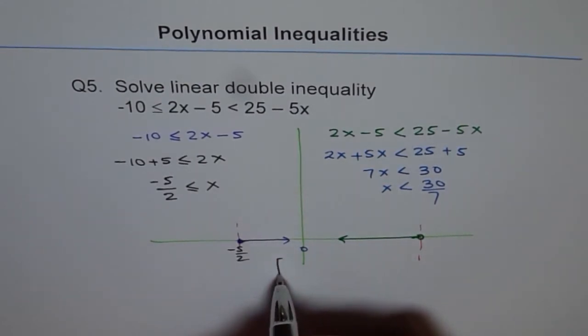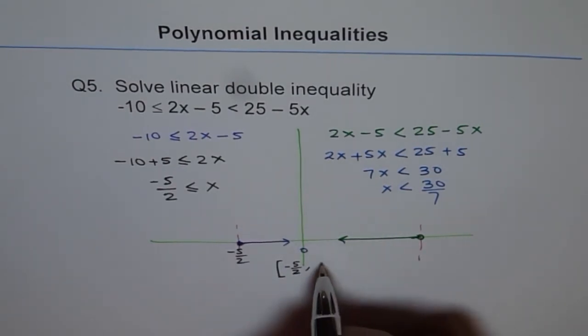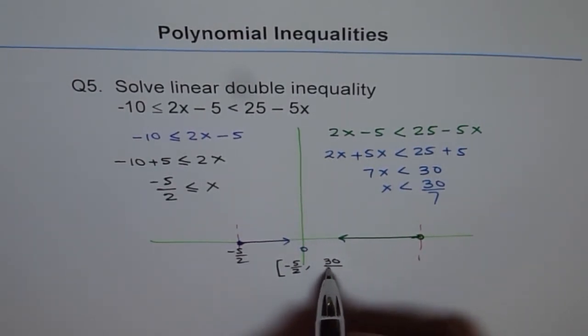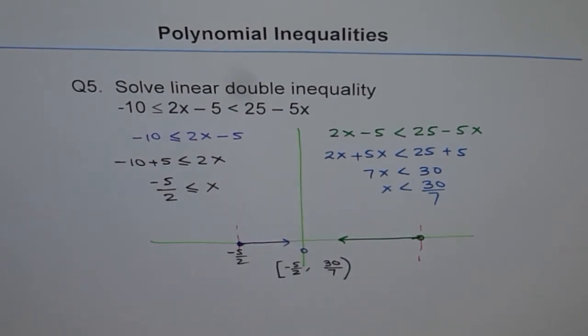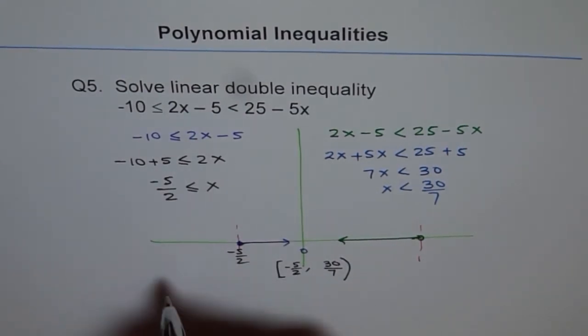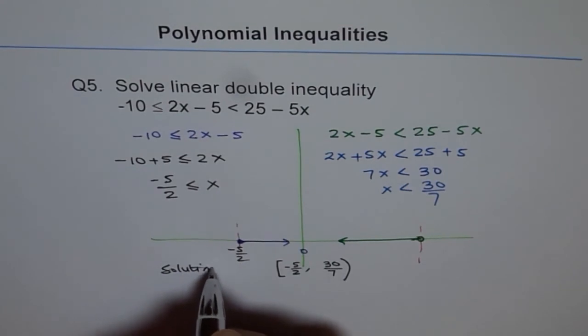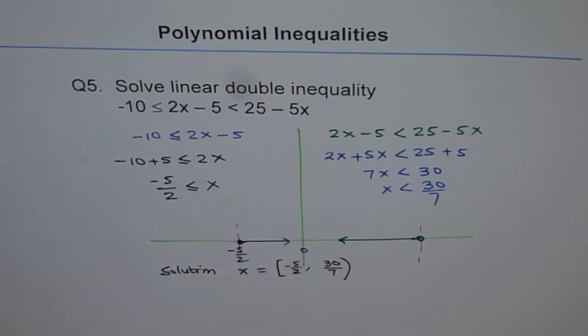Which I can write as, we have to include minus 5 over 2, but we should not include 30 over 7. But everything in between is a solution. So that is what the solution is. That is what x equals to.